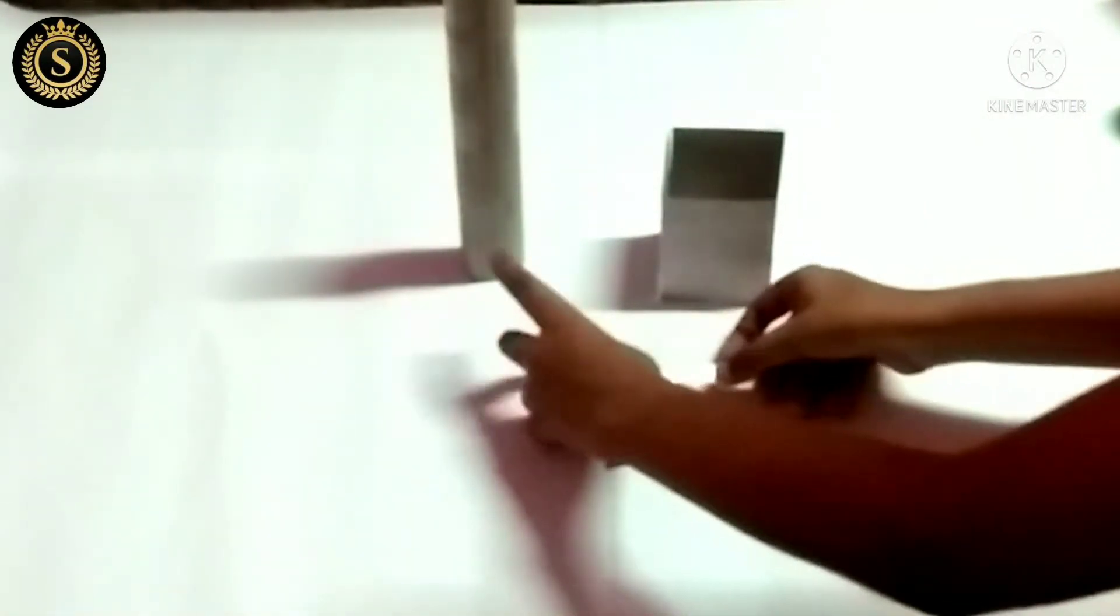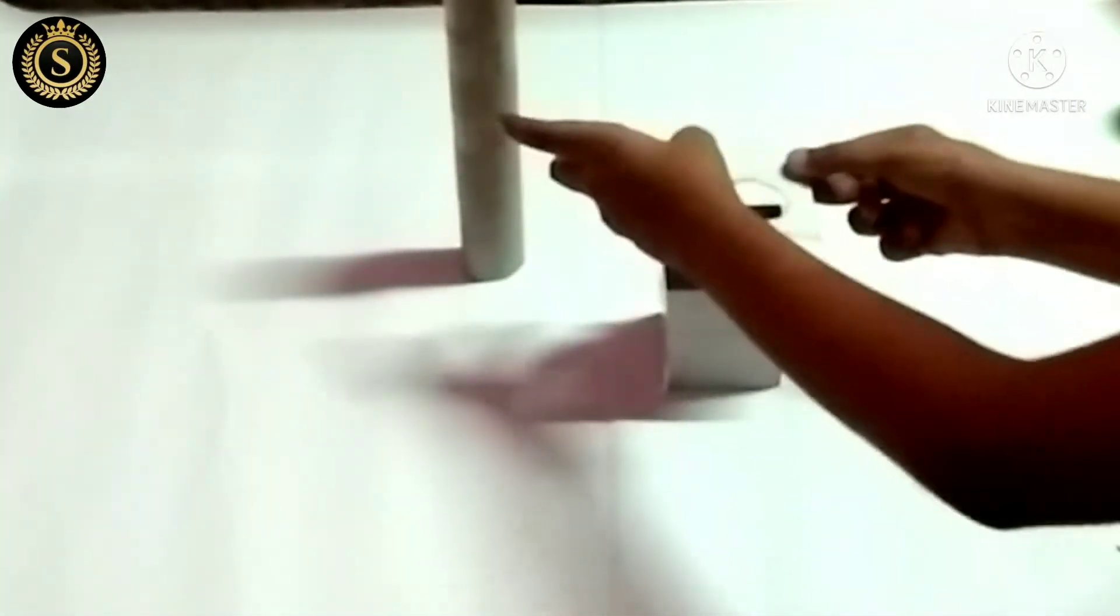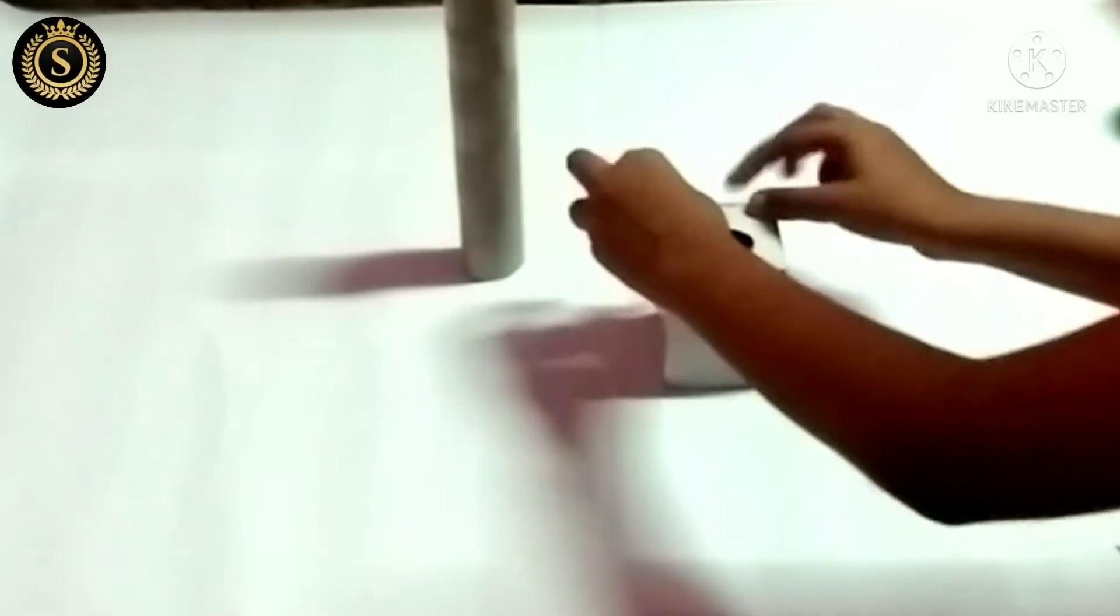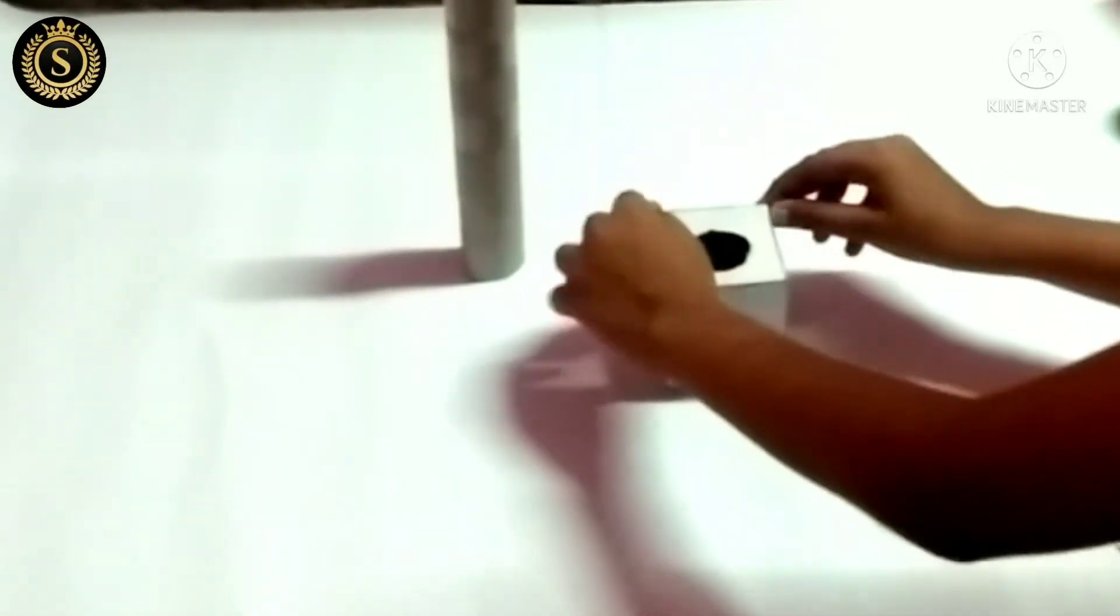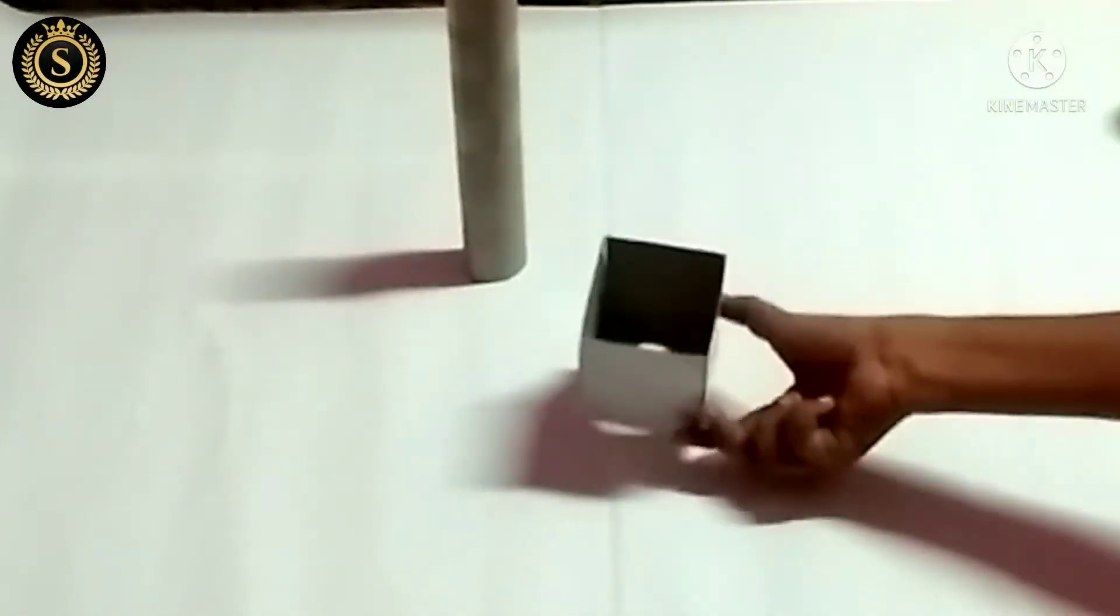Stick a tape in four sides and stick it on the box. Stick a cardboard in bottom side. Like this.